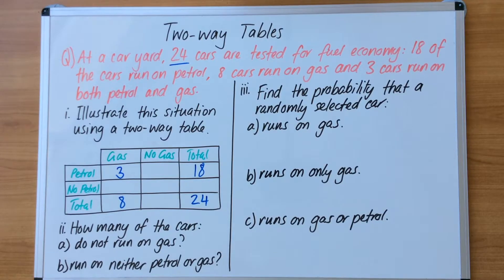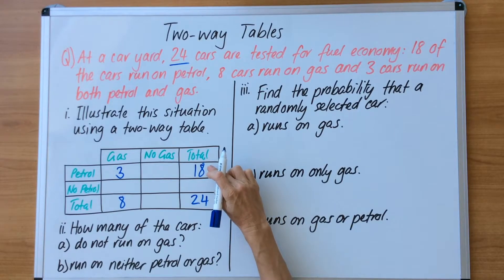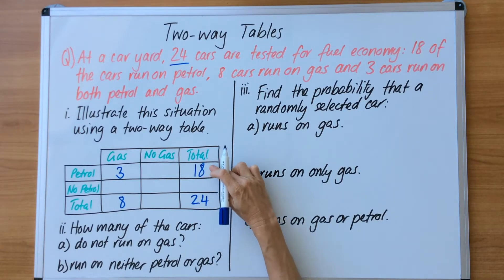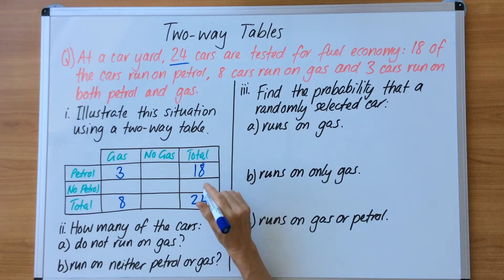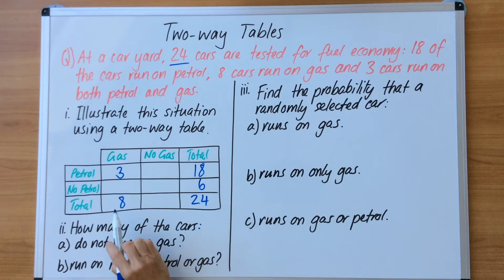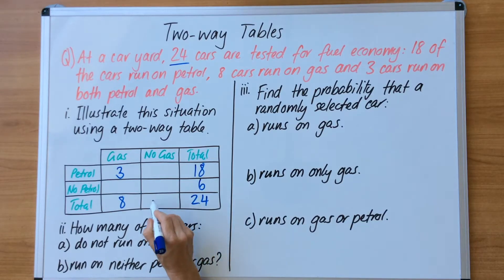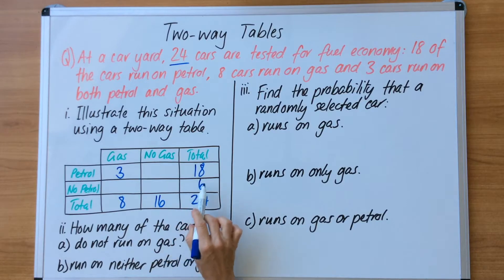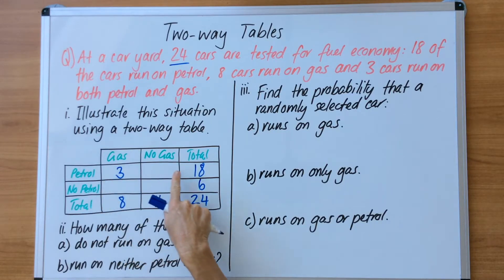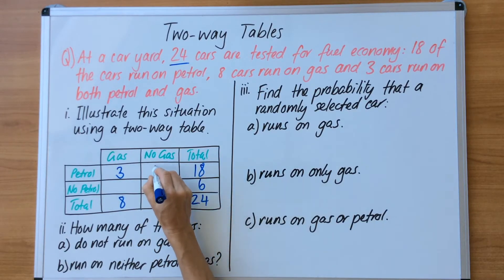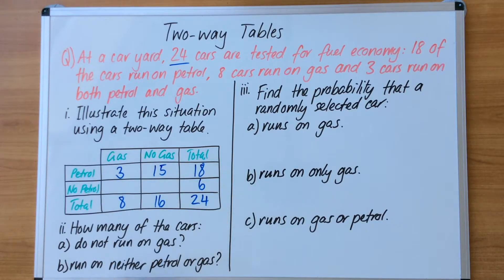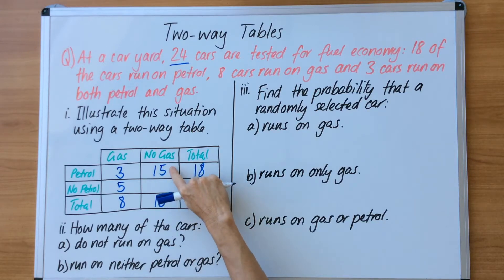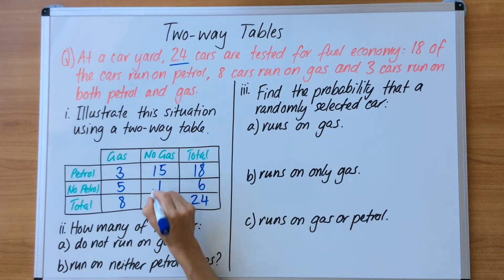Now I can fill in the missing blanks. To get from 18 to 24 I add 6, so the no-gas total is 6. To get from 8 to 24 I add 16, so the no-petrol total is 16. Running across, to get from 3 to 18 I add 15. Working down the page: to get from 3 to 8 I add 5, and to get from 15 to 16 I add 1. So you fill in the missing blanks using the totals.